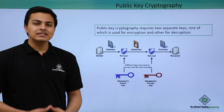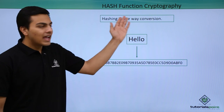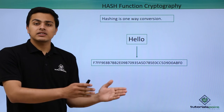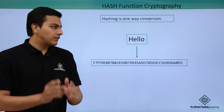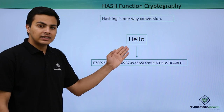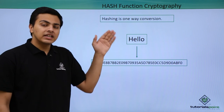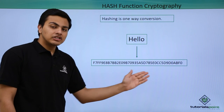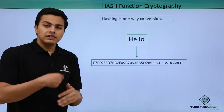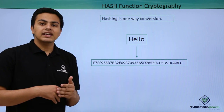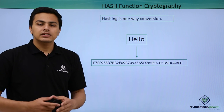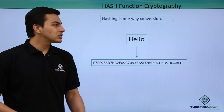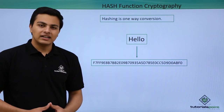Now let's talk about the last type of cryptography — hash functions. Hashing is actually a one-way conversion, which means once we have our text, for example 'hello,' and we convert it to a hash, we get our hash value but this is a one-way conversion — once we have our hash, we are not able to retrieve our original text back. That's why hashing is not recommended to protect your data.